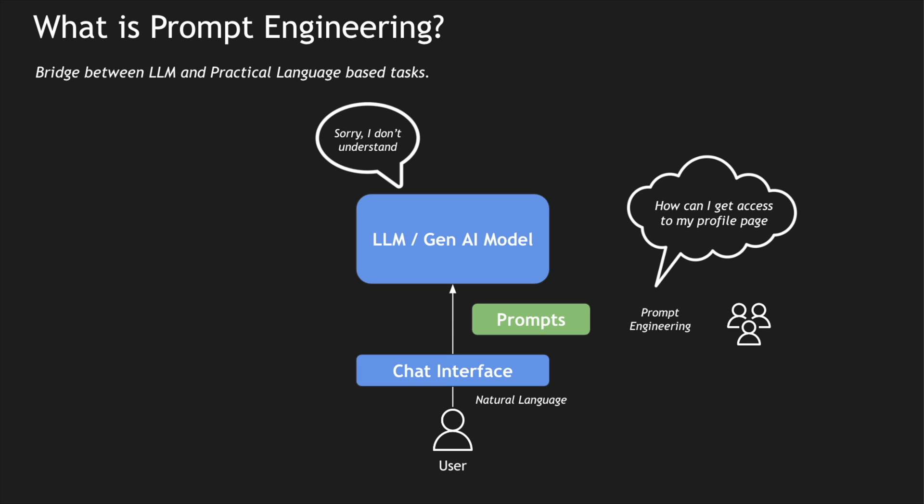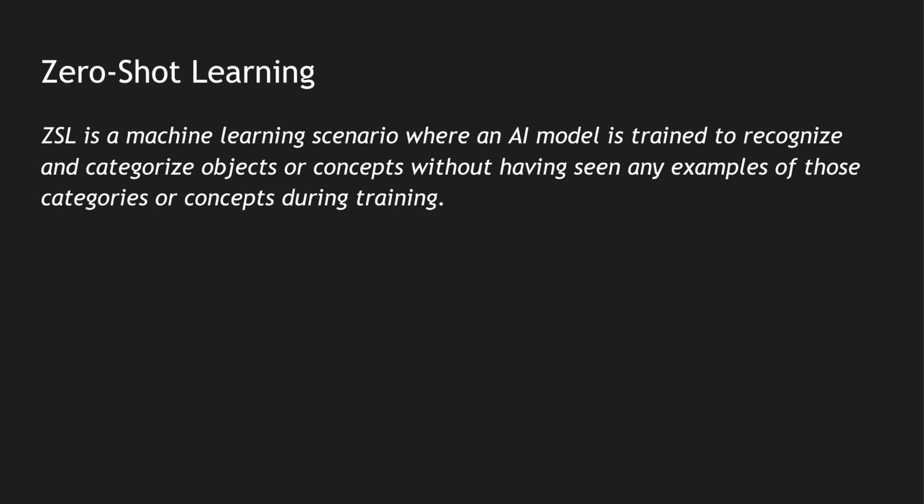Essentially, prompts are a bridge between the LLM and the practical language-based tasks which we ask the models to do. To make these prompts more efficient, we need to learn a few deep learning concepts such as zero-shot learning, one-shot learning, and few-shot learning. Let's look at what zero-shot learning is.